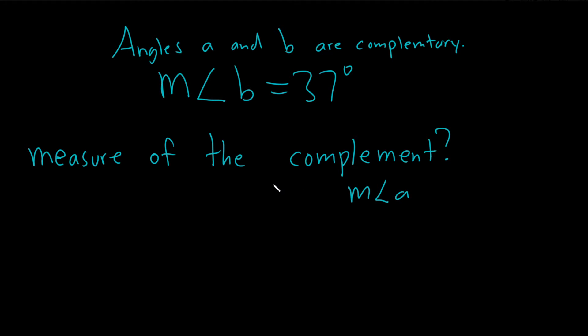So complementary angles are angles whose measures add to 90. So basically we can take the measure of angle A plus the measure of angle B and that's equal to 90 degrees.